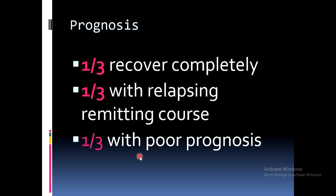Regarding prognosis, one-third of patients suffering from schizophrenia recover completely with no residual effects. One-third follow a relapsing and remitting course. One-third have a poor prognosis — however, with modern treatment facilities and long-acting injectable medications, even this group can benefit. Within the poor prognosis group, one-third may recover completely, one-third will have a relapsing and remitting course, and one-third will have a persistently poor prognosis.